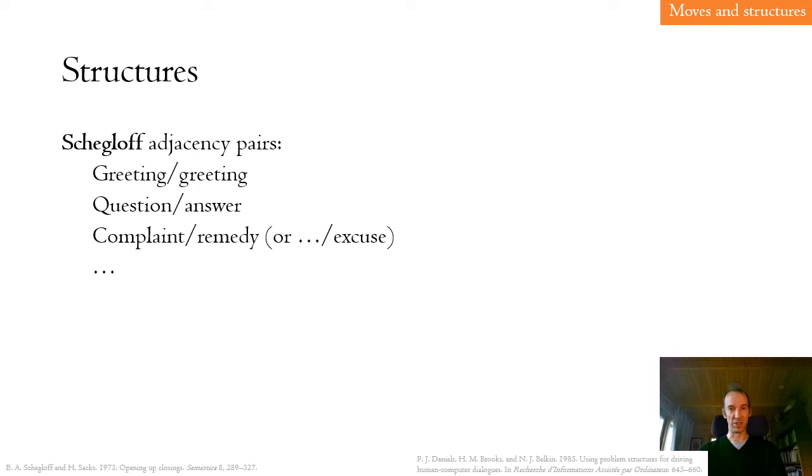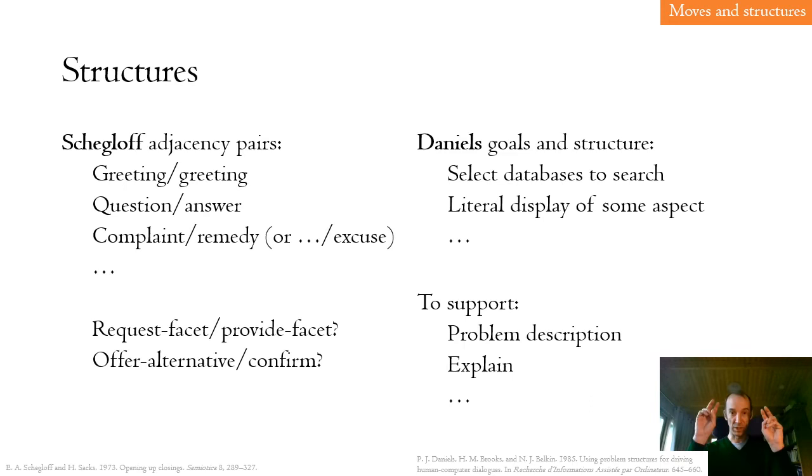So given an alphabet of moves using any of those schemes, some sequences are still more likely or more correct. And again, there's a lot we can draw on here. In conversational analysis, particularly following Schegloff, we see adjacency pairs, where the type of the first turn constrains that of the second or the first provokes the second. Conventional pairs are, for example, greeting-greeting or question-answer, but in IR we might see others. And in interactive IR, Daniels looked at non-specific inquiries and found particular patterns of sequencing, quoting here.